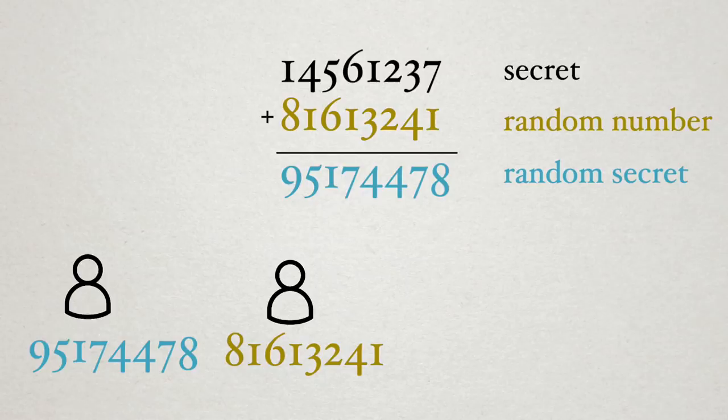For example, if we take 5 plus 6 equals 1, and I give you only the 1, you have no information about what two numbers led to it. So to determine the secret, the two participants must come together and subtract their numbers to reverse the random process, and recover the secret. This simple procedure is known as a one-time pad, and was proven to be perfectly secret by Claude Shannon.